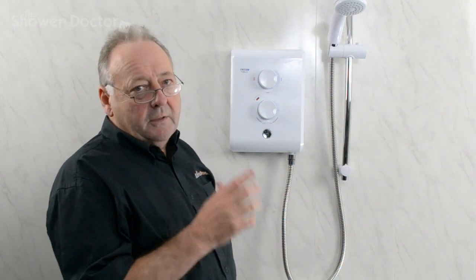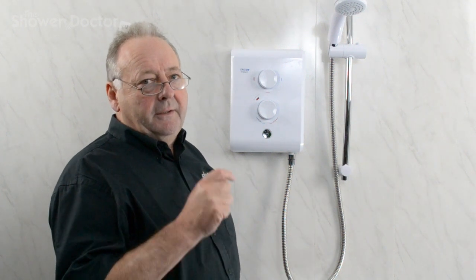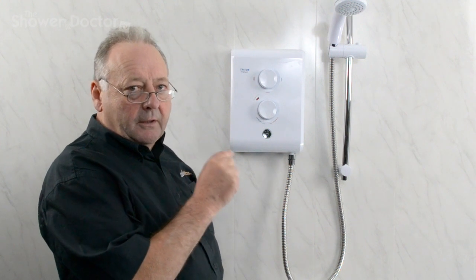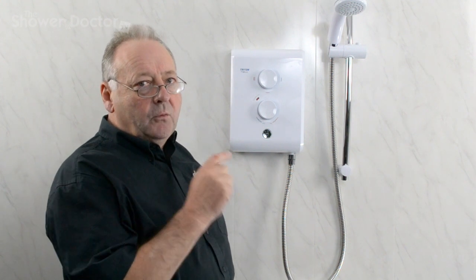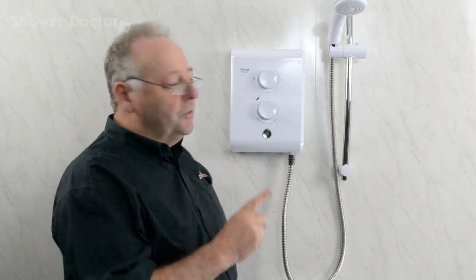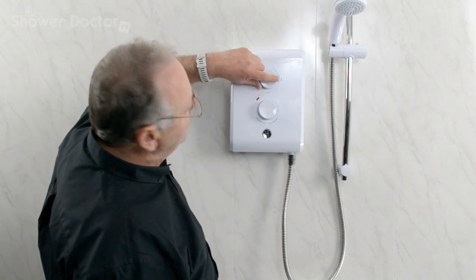Okay, so now we have the power and the water back on to the shower. This is a really important bit. Before we turn the shower back on again, we need to make sure it's set to cold. So we turn the power selector here to cold.